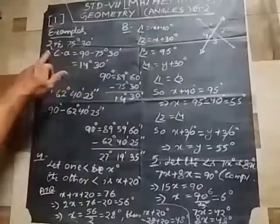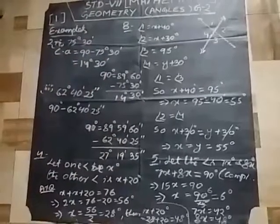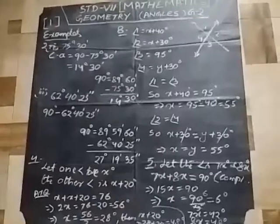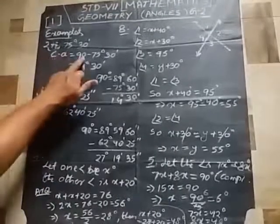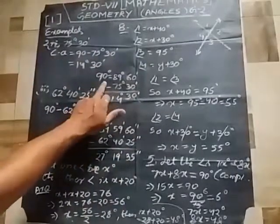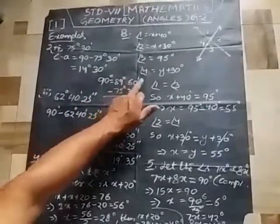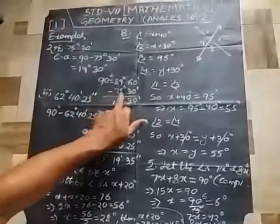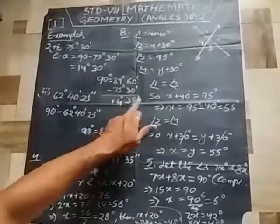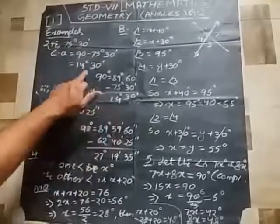Example 2: Find the complementary angle of 75 degrees and 30 minutes. You have to subtract from 90 degrees: 90 minus 75°30'. Convert 90 degrees to 89 degrees and 60 minutes. Then subtract 75 degrees and 30 minutes. After subtracting, the result is 14 degrees and 30 minutes. So the complementary angle of 75°30' is equal to 14°30'.